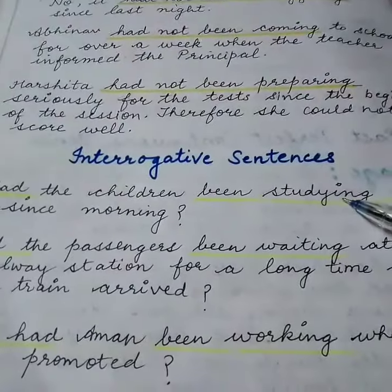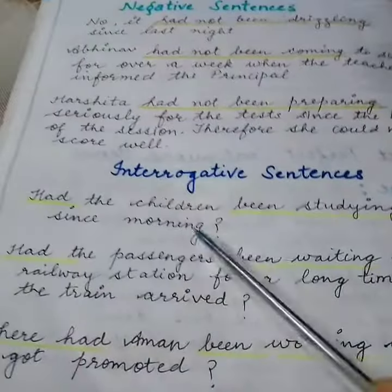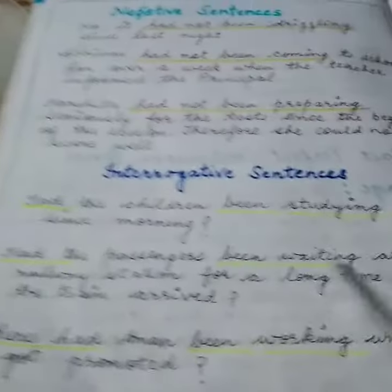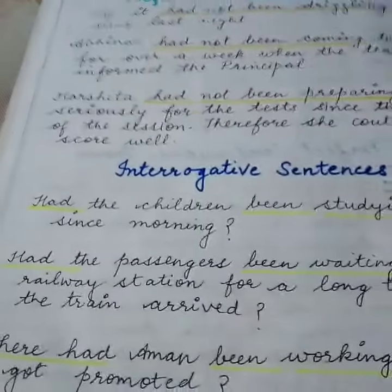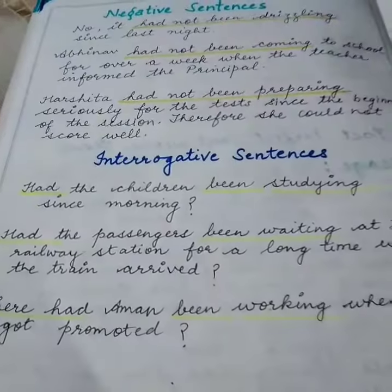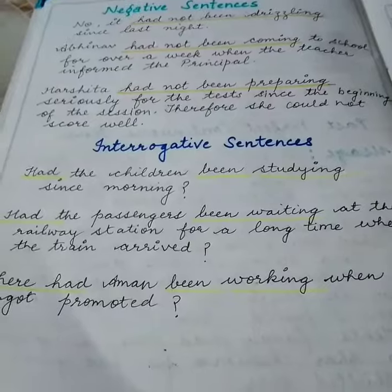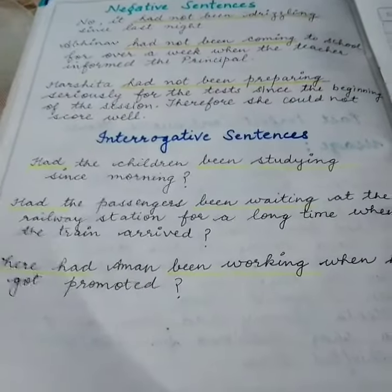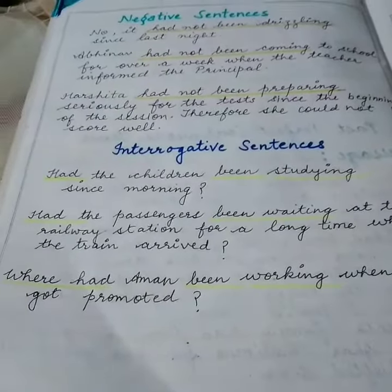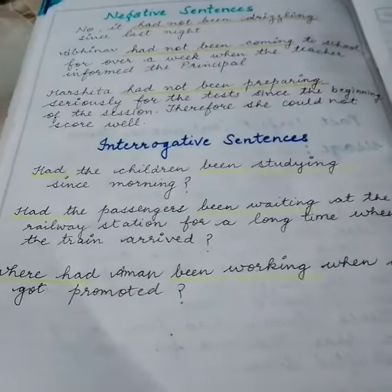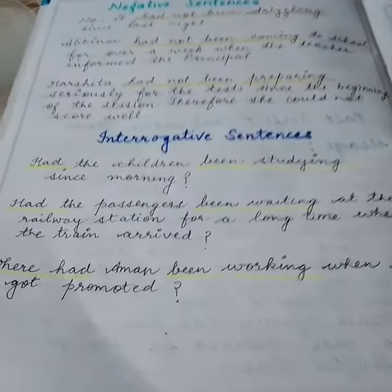Now, interrogative sentences. Had the children been studying since morning? Had the passengers been waiting at the railway station for a long time when the train arrived? Where had Aman been working when he got promoted?